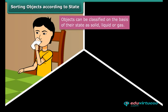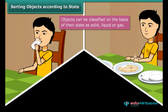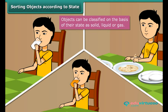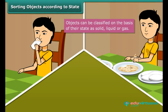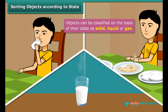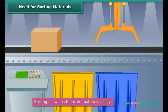The water you drink is liquid, whereas the food you eat is solid. The chilled juice you relish in summers is liquid, whereas the glass container you have it from is solid. The steaming hot milk you enjoy in winters is liquid, whereas the steam coming out of the milk is a gas. All objects around us can be classified into one of three categories: solid, liquid, and gas.